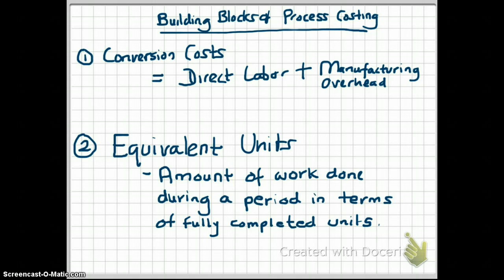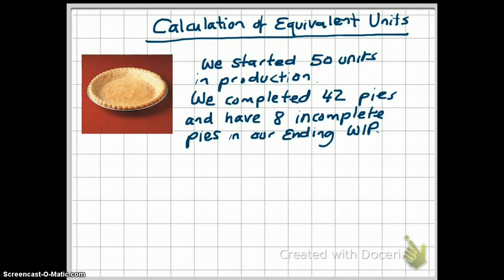At this point it may still be confusing, but just know that equivalent units means the amount of work done during a period in terms of fully completed units. Next, I'm going to show you how to calculate equivalent units with an example. We're going to say that we started 50 units of pies — this particular company started 50 units in production during the period.